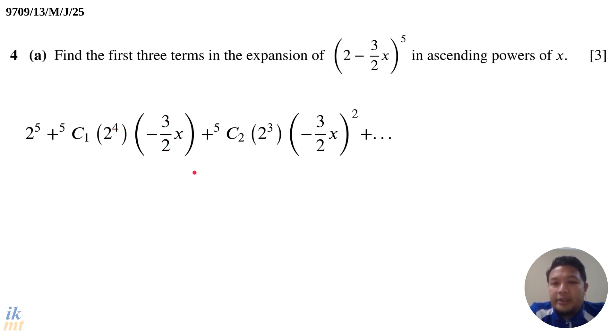You don't see the power 1 there, but you don't have to write it down. So then plus the next term, 5C2 times 2 power 3, reduce the power by 1 compared to the previous, and then times negative 3 over 2x power 2. And we can stop here actually, because they want you to find only the first 3 terms. So because this expansion actually goes on, that's why I put here plus dot dot dot to show that there's actually more, but we don't really have to show it.